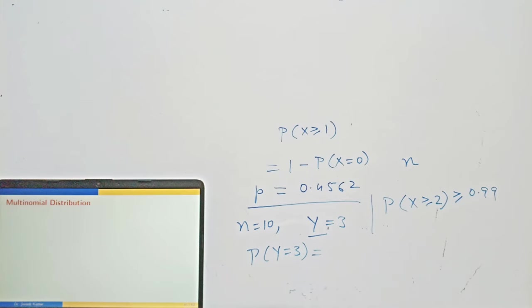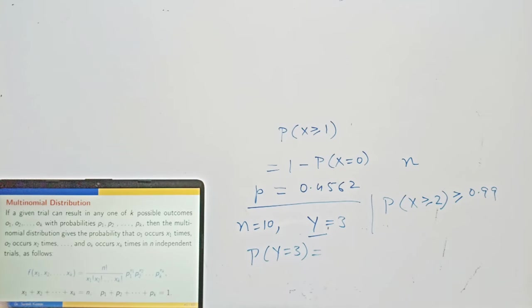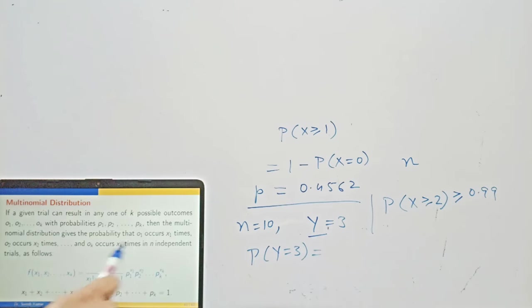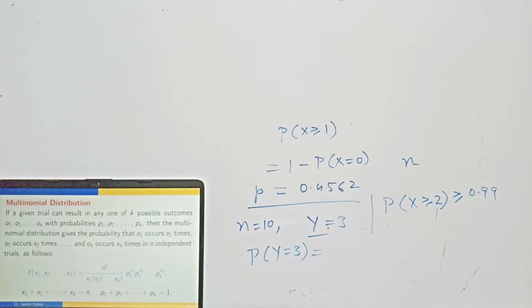Next is multinomial distribution. In binomial distribution, each trial results into two outcomes. What if the trial results into more than two outcomes? Then we have multinomial distribution. If a given trial can result in any one of k possible outcomes O1 to Ok with probabilities P1, P2, ..., Pk, then the multinomial distribution gives the probability that O1 occurs x1 times, O2 occurs x2 times, and so on in n independent trials. If k = 2, it reduces to the binomial distribution.